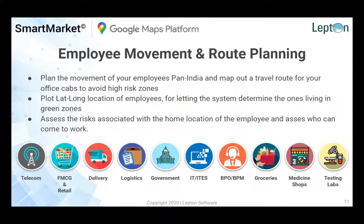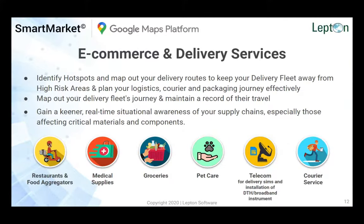A very important use case is employee movement. Today we have thousands of employees working from home, and as soon as there is an option to call them back to office, we need to make sure we call only those who are in a safe zone — for both employees and customers. You can plot customer addresses or lat-long coordinates and see on the map who is in a containment zone, red zone, or green zone, and plan whom to call to office. For e-commerce and delivery, when you receive an order, you may not know if it's a containment zone or red zone, and you may not want to accept orders from containment zones.